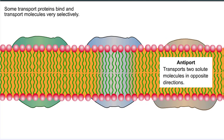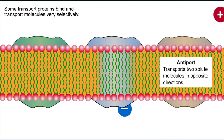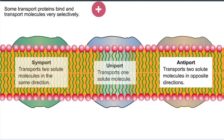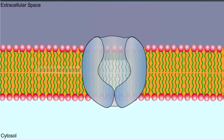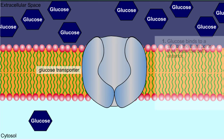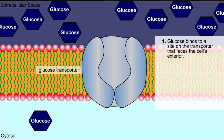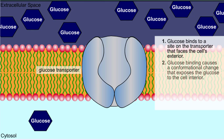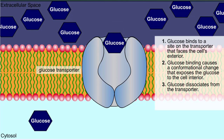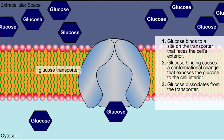The classification depends on the number of types of solute molecules transported and the respective direction of transport. One membrane transport protein found in liver cells functions to shuttle glucose between the liver and bloodstream, and is an example of a uniport transporter, for it moves only one solute. The direction of movement is passive, or with its concentration gradient.